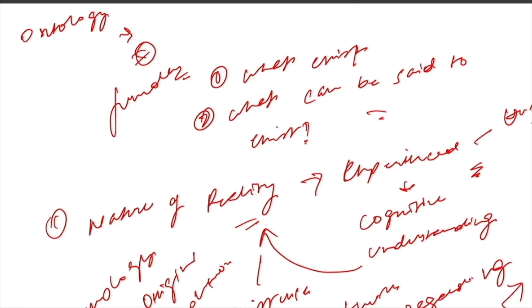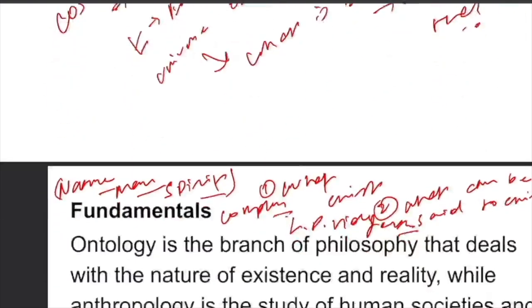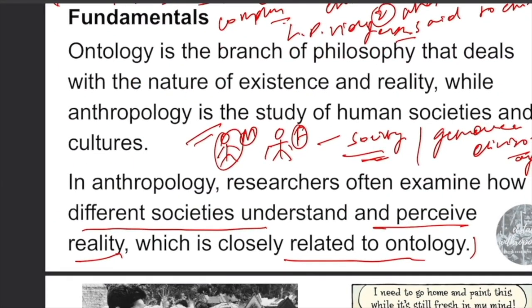By examining these, we can understand that beliefs shape cultural practices and social structures. Ontological analysis helps us reveal the complex relationship between beliefs, practices, and wider historical and structural processes.